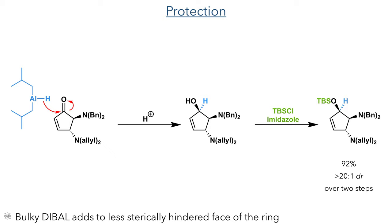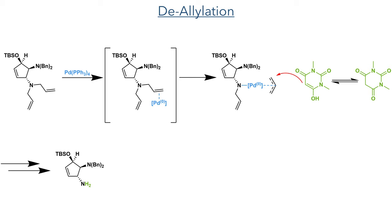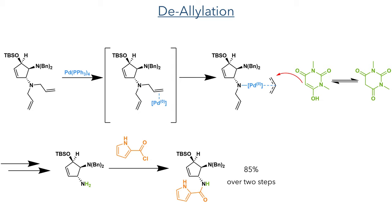With this in place, they then carried out a de-allylation. Palladium(0) first coordinates to the alkene and then inserts into the nitrogen-carbon bond, forming an allyl cation that is then attacked by dimethylbarbituric acid. This reaction happens twice to yield the free amine, which was then reacted with pyrrole acyl chloride, forming the target amide in an 85% yield over two steps.